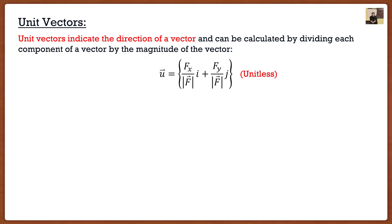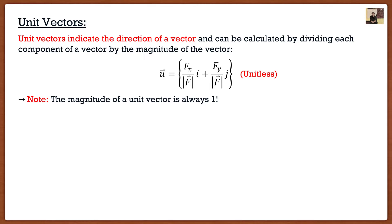If we have pounds on top and pounds on the bottom, they cancel. Some of you may think that's why it's called the unit vector — well, it's a good way to remember it's unitless, but the unit vector is actually called a unit vector because of one very specific property: the magnitude of a unit vector is always equal to one. So if I'm told it's a unit vector, its magnitude is one — no calculation needed. This simplifies many formulas going forward.